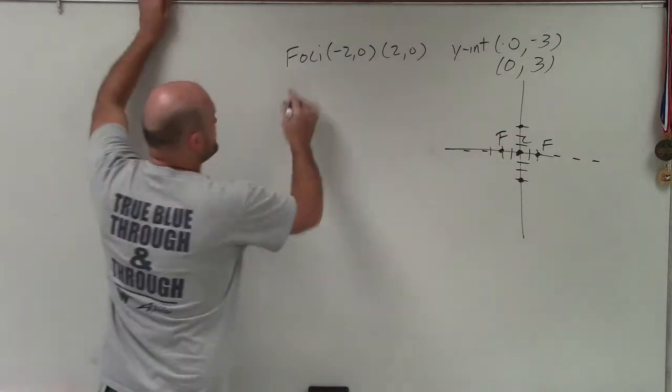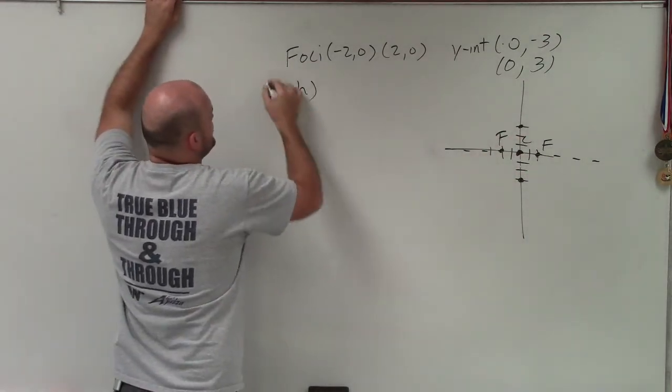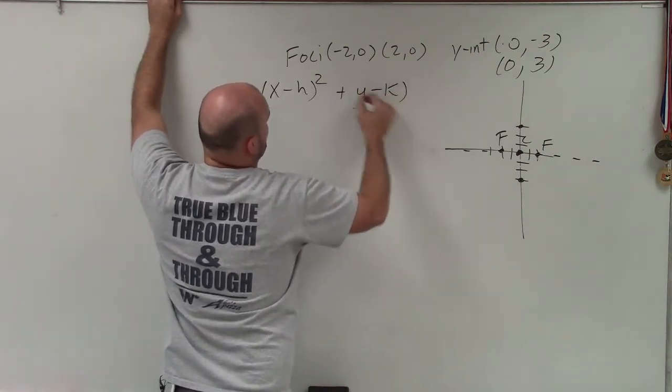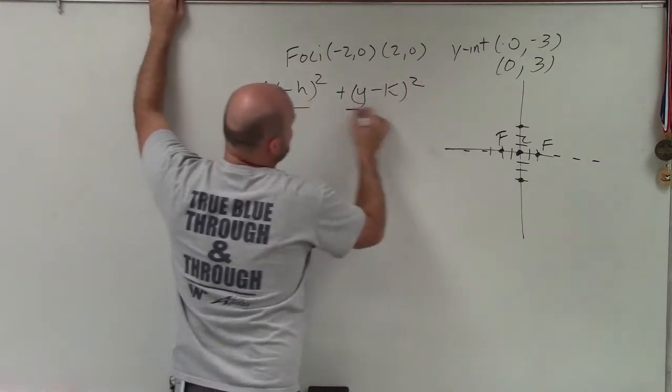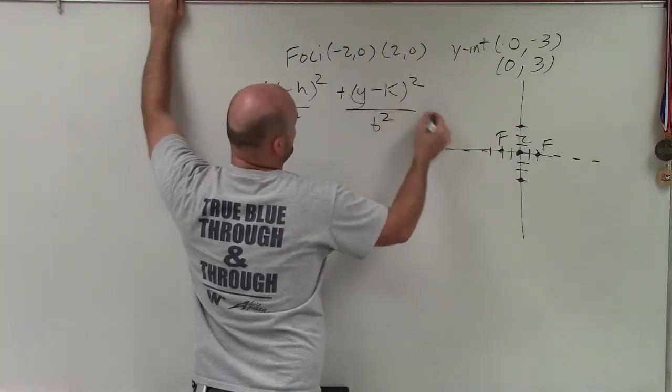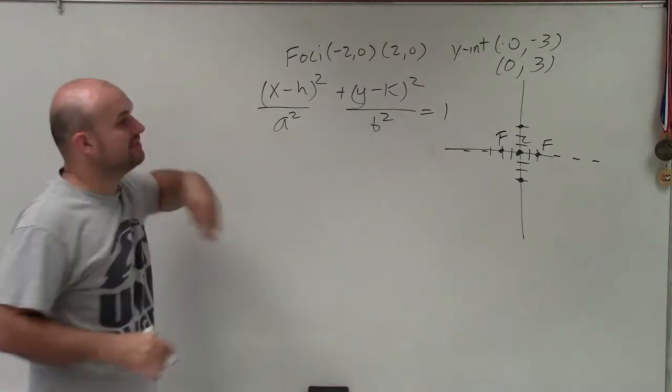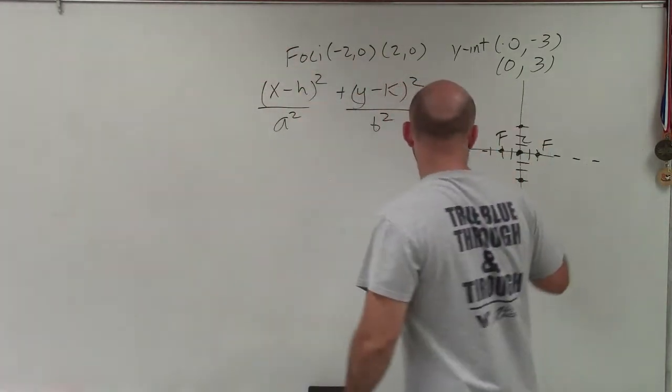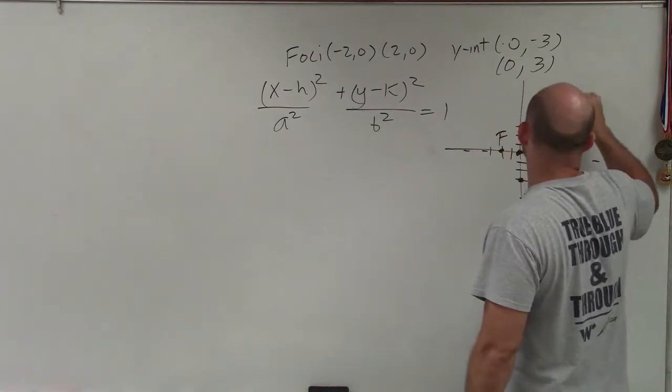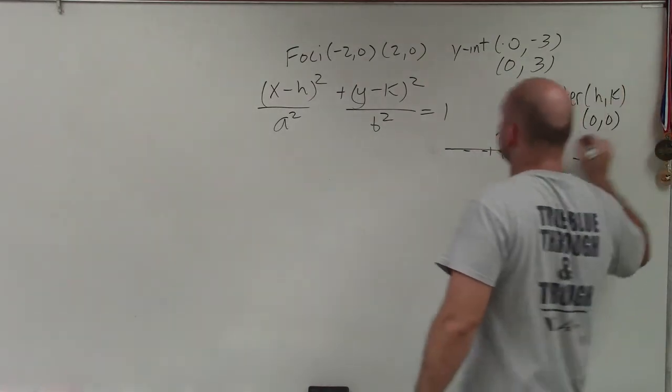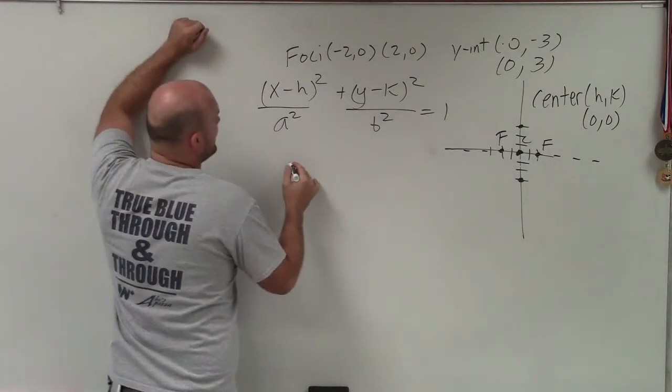Let's write the equation. It's (x - h)² / a² + (y - k)² / b² = 1. Since we have a horizontal major axis, a² is under the x and b² is under the y. Now, in this case, our center is (0, 0). So our center h, k is (0, 0), which means we can simplify to x² / a² + y² / b² = 1.